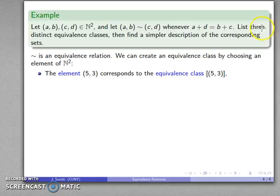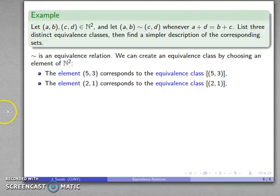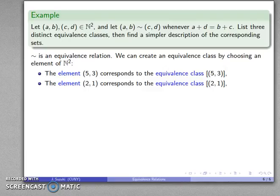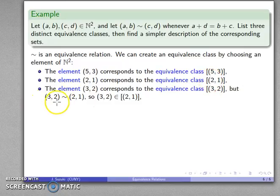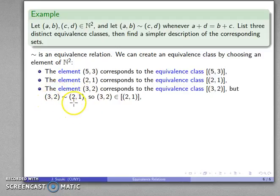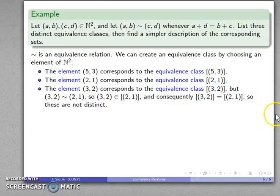I want three distinct equivalence classes, so I'll pick another element: (2, 1), corresponding to the equivalence class [(2, 1)]. But I have to make sure these two equivalence classes are not the same thing. Then I'll try (3, 2), corresponding to [(3, 2)]. But notice: (3, 2) and (2, 1) are equivalent, because 3 plus 1 equals 4 and 2 plus 2 equals 4. So (3, 2) is in the equivalence class of (2, 1), meaning [(3, 2)] equals [(2, 1)] — these are not distinct equivalence classes. So I'll instead pick the element (1, 1), corresponding to [(1, 1)]. You should verify that [(5, 3)], [(2, 1)], and [(1, 1)] are actually three distinct equivalence classes.